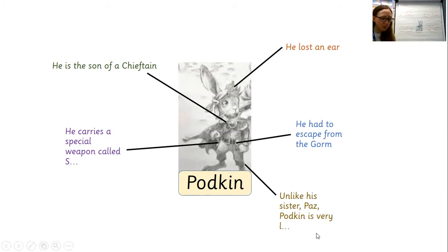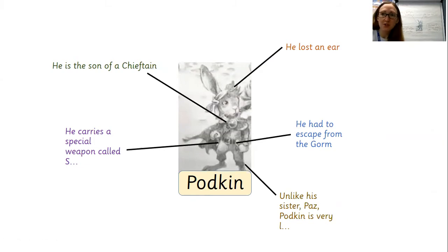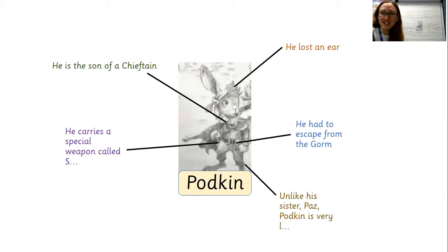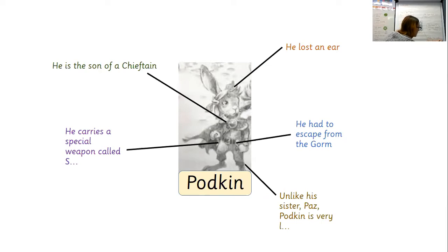It might be quite interesting to explore a comparison between Podkin and his sister, because they're very different. So I could summarise here by saying: unlike his sister Paz, Podkin is very... what word could we use to describe him? Beginning with L — he's described as lazy. He avoids all of his lessons. He's supposed to be learning important skills to be ready to become a chieftain one day, and he slinks off and goes for naps instead. So we can put down: unlike his sister Paz, Podkin is lazy.